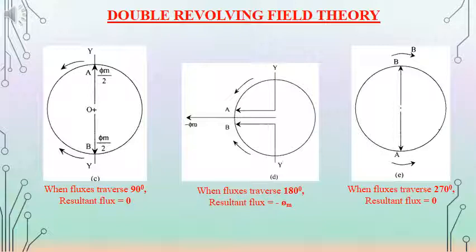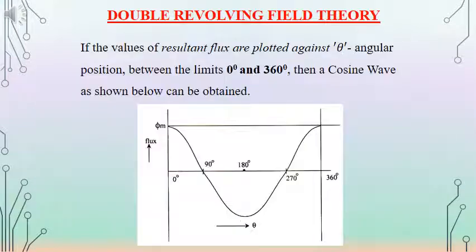In the third figure, the angle of rotation for A and B is 270 degrees, and they are in phase opposition with the same magnitude. The resultant is equal to zero, consistent with the equation phi_m*cos(theta) giving zero when theta equals 270 degrees. From the analysis of two vectors A and B rotating in opposite directions each with magnitude phi_m/2, the resultant follows the equation phi_m*cos(theta).